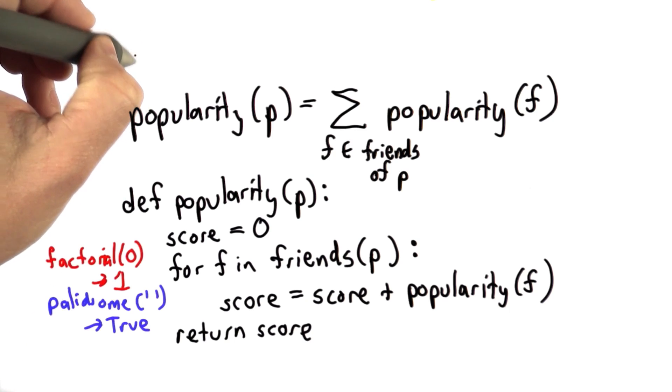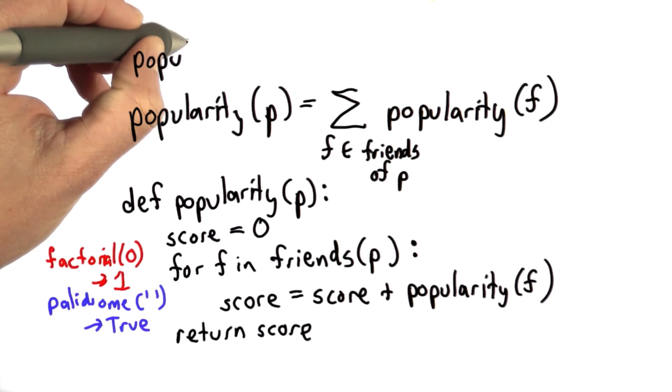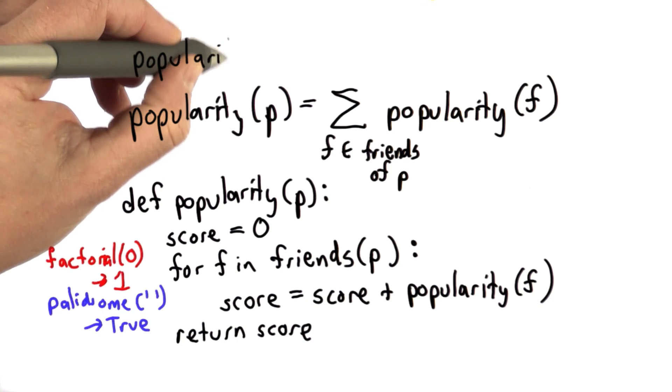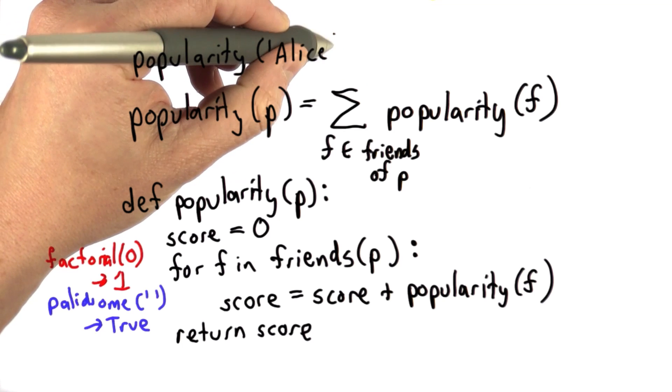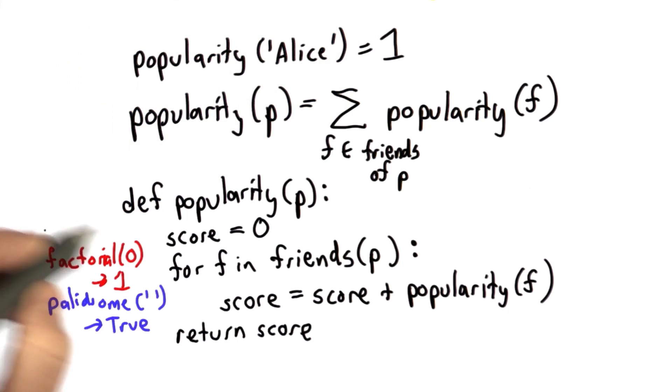So suppose we assume we know the popularity of Alice, and sadly Alice is not very popular. Her popularity score is a 1. So that looks like a base case. We defined the base case for factorial, for 0, for palindrome, for space. Let's pick Alice as our base case now.